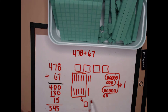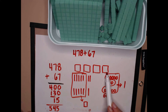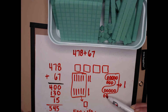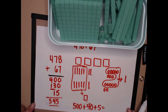I don't see anything else that I can group into a hundred or a ten, so I'm going to count up what I have and use this as my proof picture to prove my answer is five hundred forty-five. One hundred, two hundred, three hundred, four hundred, five hundred, ten, twenty, thirty, forty, one, two, three, four, five. Five hundred plus forty plus five equals five hundred forty-five.